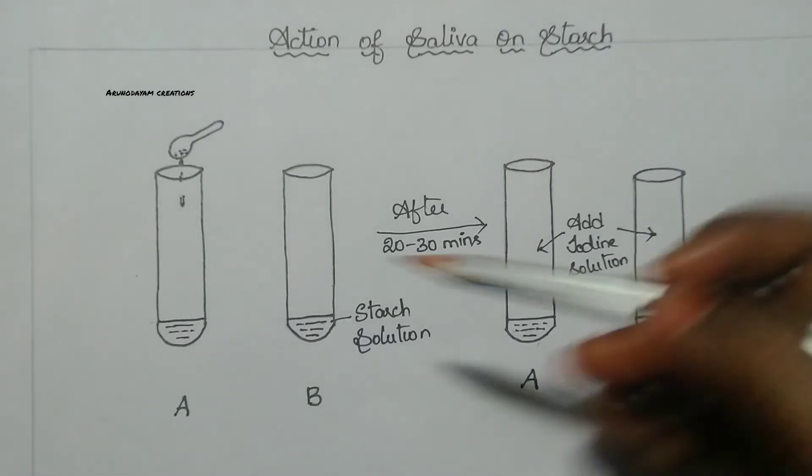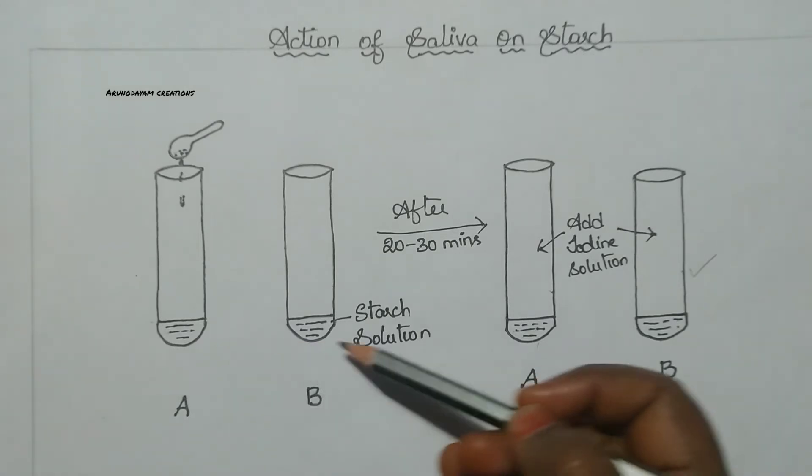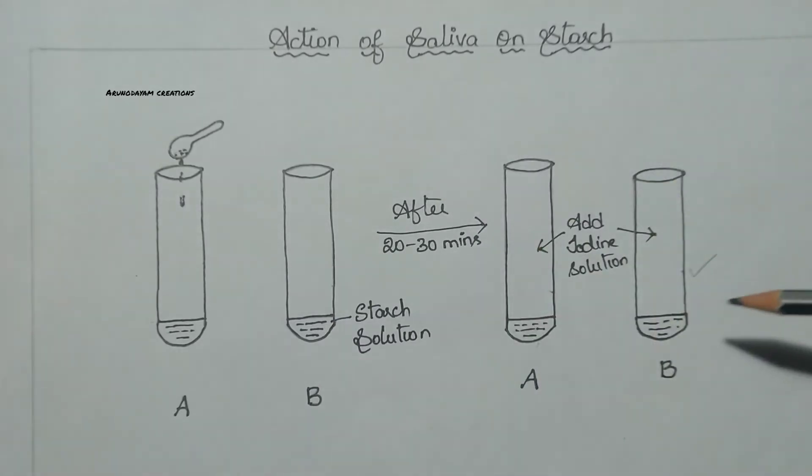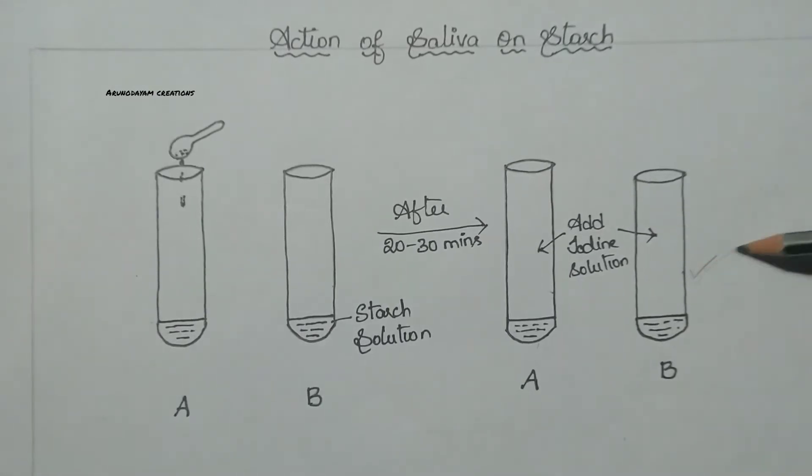Why? Because we have added starch. We prepared starch solution and we have added it to test tube B. So that after adding iodine solution, the starch solution will turn into blue-black color. So by this we can say that this test tube has carbohydrates.